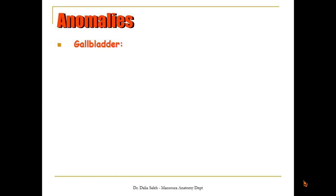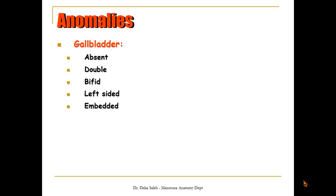Anomalies regarding gallbladder formation include: agenesis or absent gallbladder, or the opposite — it is duplicated or bifid. There may also be abnormality in its position, so it is on the left side instead of the right side, or embedded within the liver tissue. Sometimes it is floating, with a piece of mesentery holding it to the undersurface of the liver.